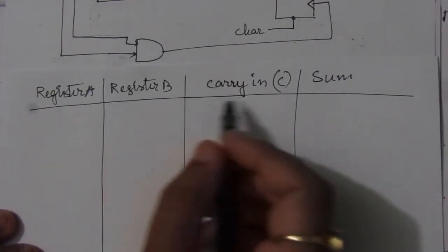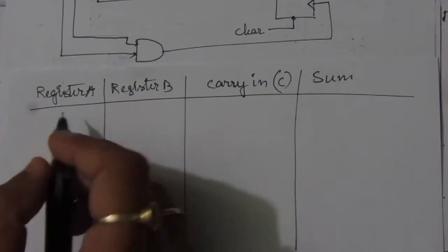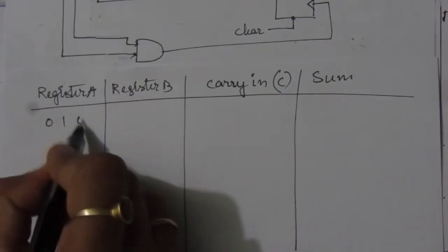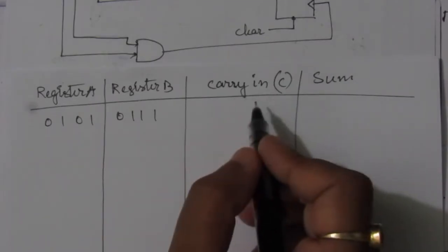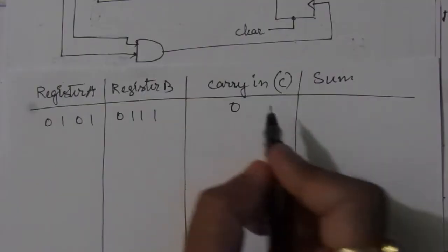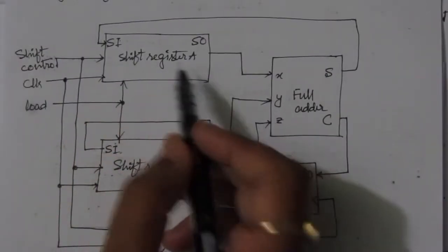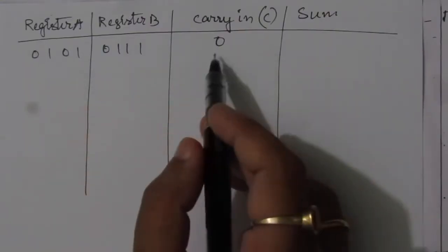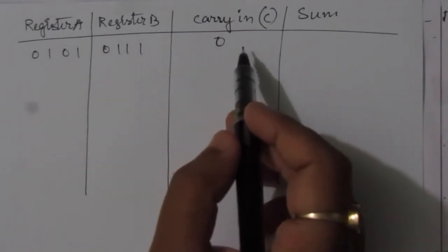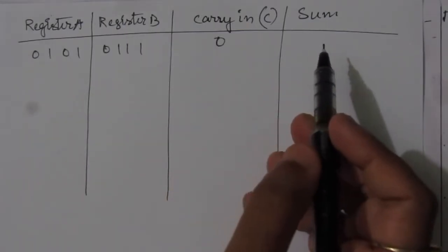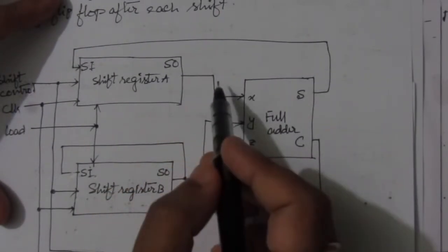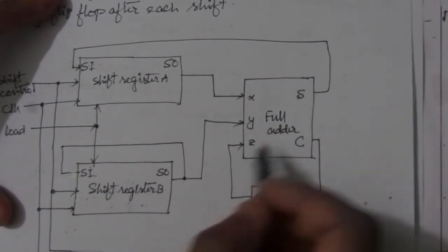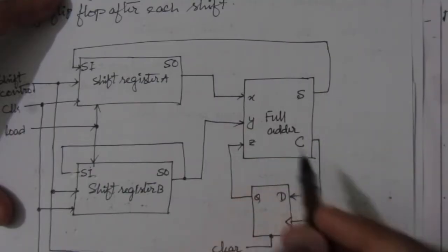We are given that the content of register A is 0101, content of register B is 0111, and the carry input is reset to 0. To find the sum, we add the rightmost bit (serial out) of register A, the rightmost bit of register B, and the carry in. The carry output becomes the next carry in.